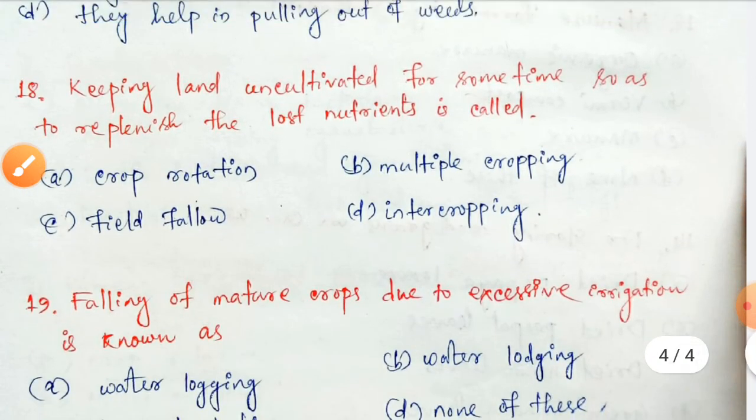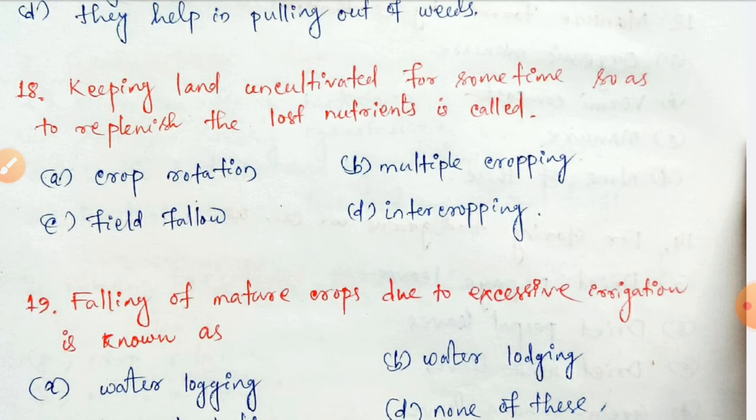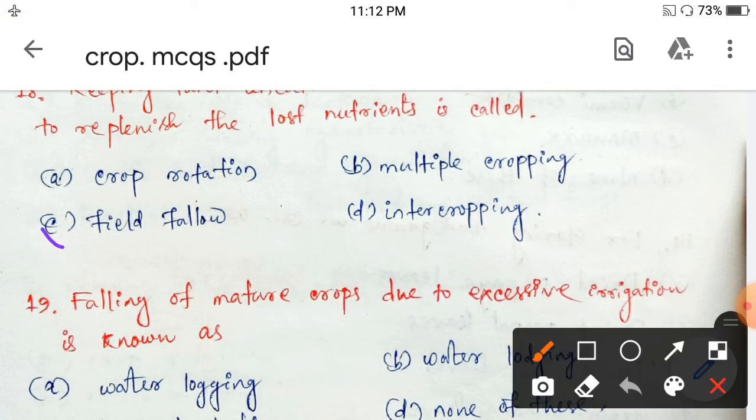Next question: keeping land uncultivated for some time so as to replenish the lost nutrients is called — crop rotation, multiple cropping, field fallow, or intercropping? It is called field fallow. Option C.